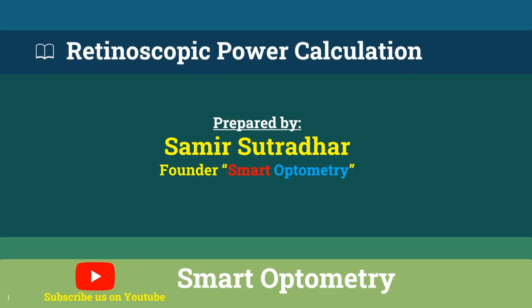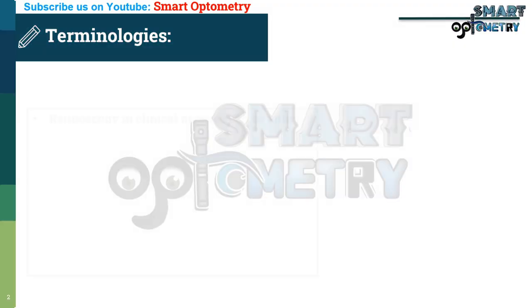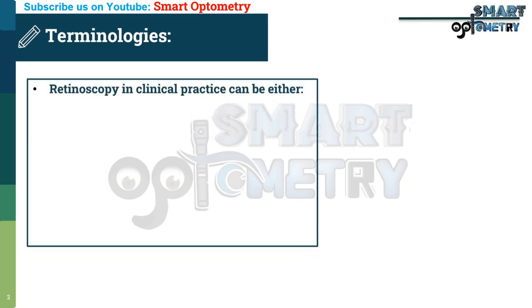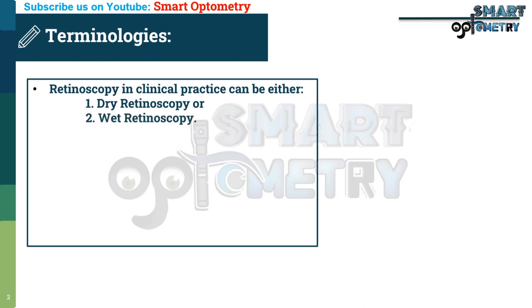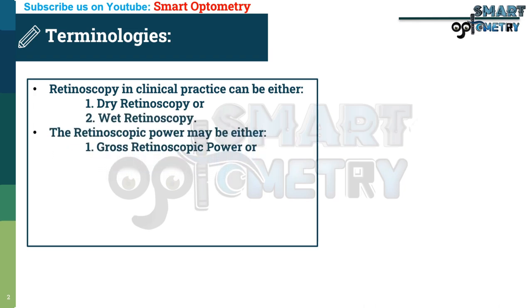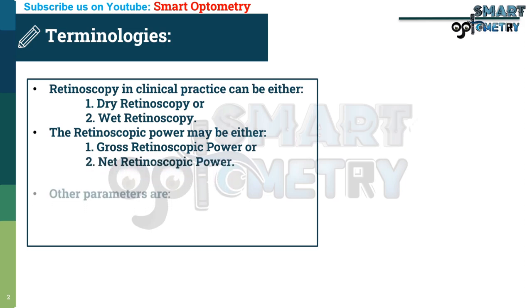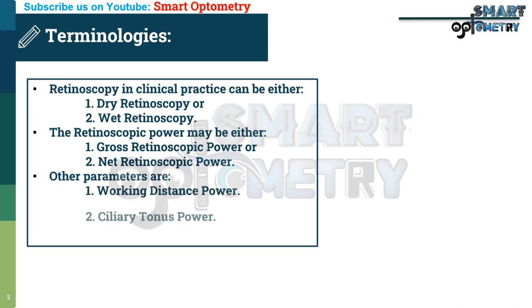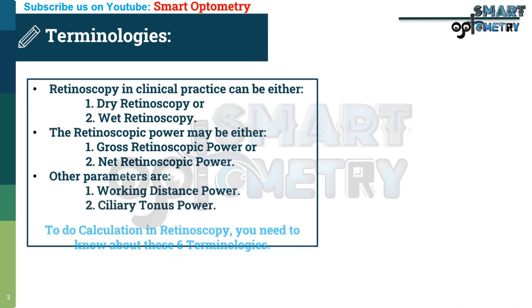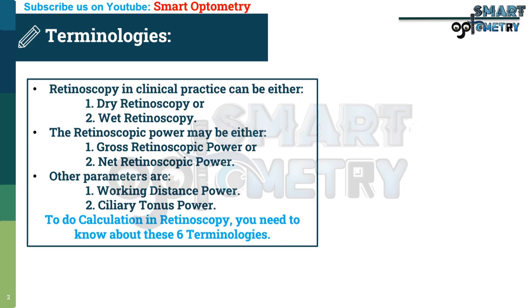Today I will discuss retinoscopic power calculation. Retinoscopy in clinical practice can be either dry retinoscopy or wet retinoscopy. The retinoscopic power may be either gross retinoscopic power or net retinoscopic power. Other parameters are working distance power and ciliary tonus power. To do calculation in retinoscopy, you need to know about these six terminologies.